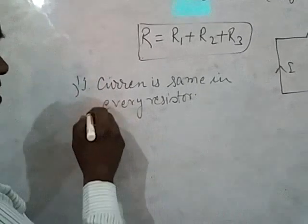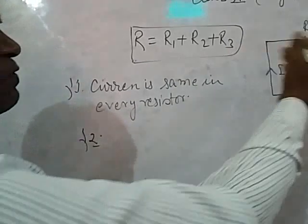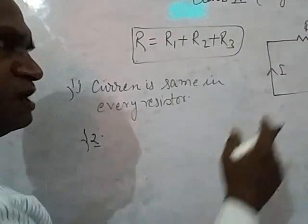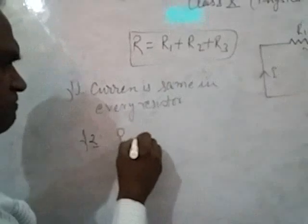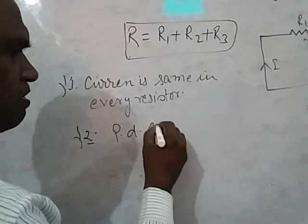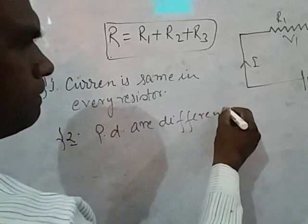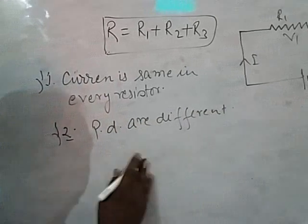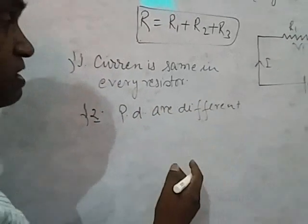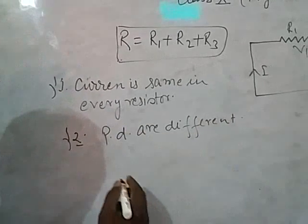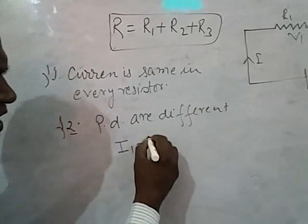Potential difference are different. Now what is ratio of potential difference in the resistor? The current is same, I1 equals I2.